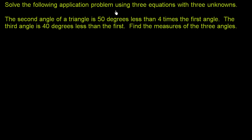Solve the following application problem using three equations with three unknowns. The second angle of a triangle is 50 degrees less than four times the first angle. The third angle is 40 degrees less than the first. Find the measures of the three angles.